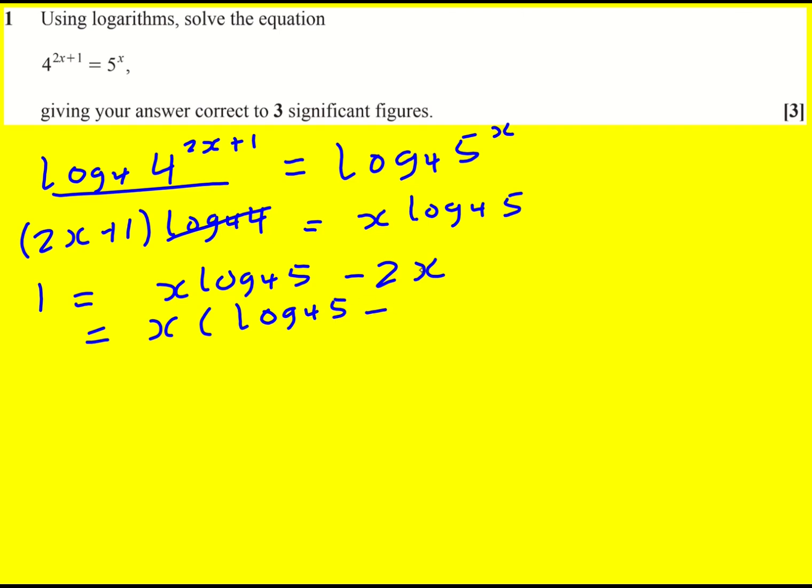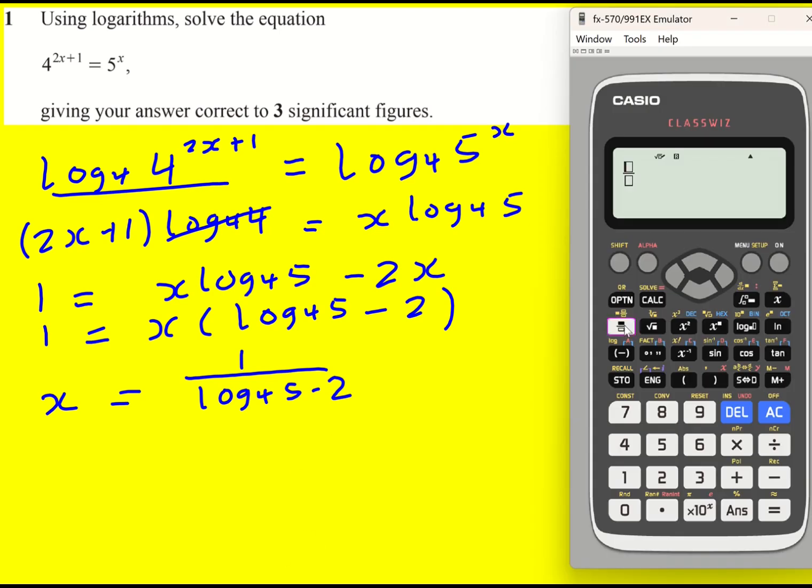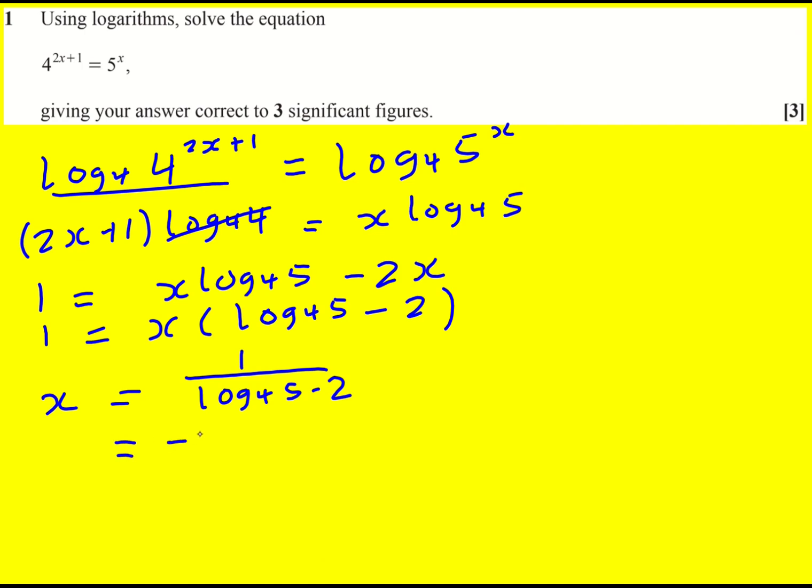Definitely want to talk about this method because in another question you could be asked to leave it exact. And then we can just divide by all of that so x will equal 1 over log to base 4 of 5 minus 2. It's only at this point I'm going to get my calculator out and put it in. This gives minus 1.1918 or minus 1.19 to three significant figures.